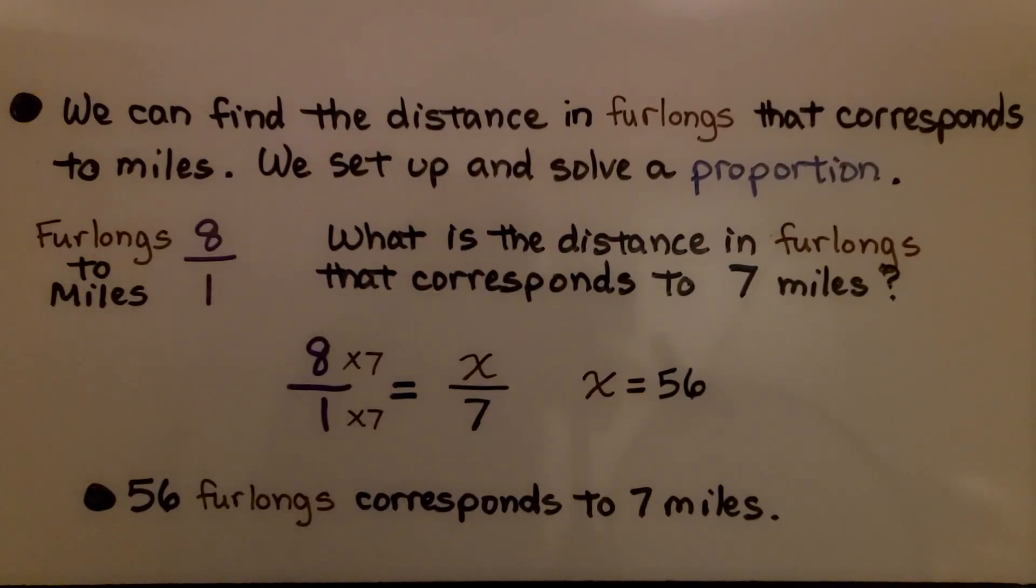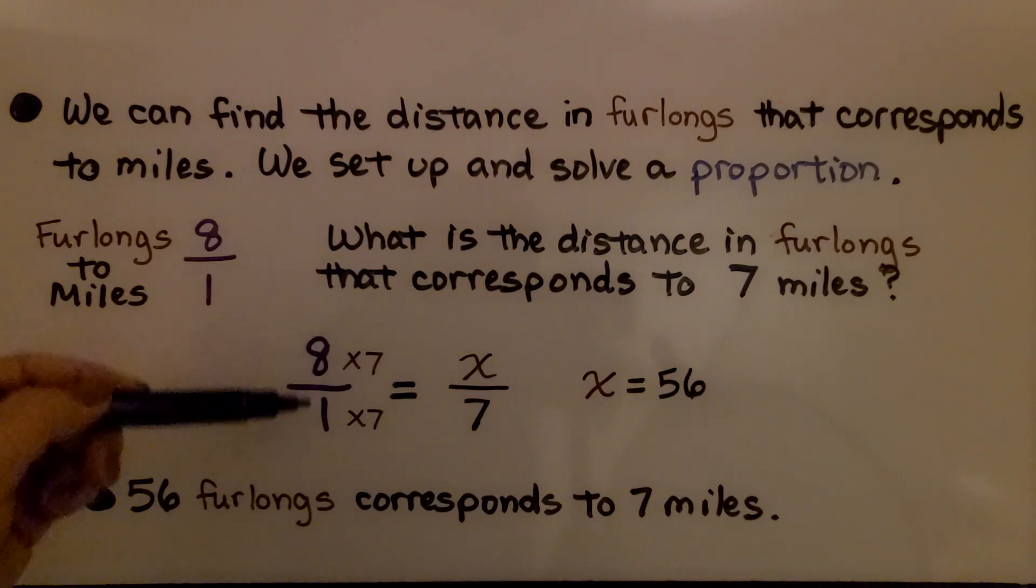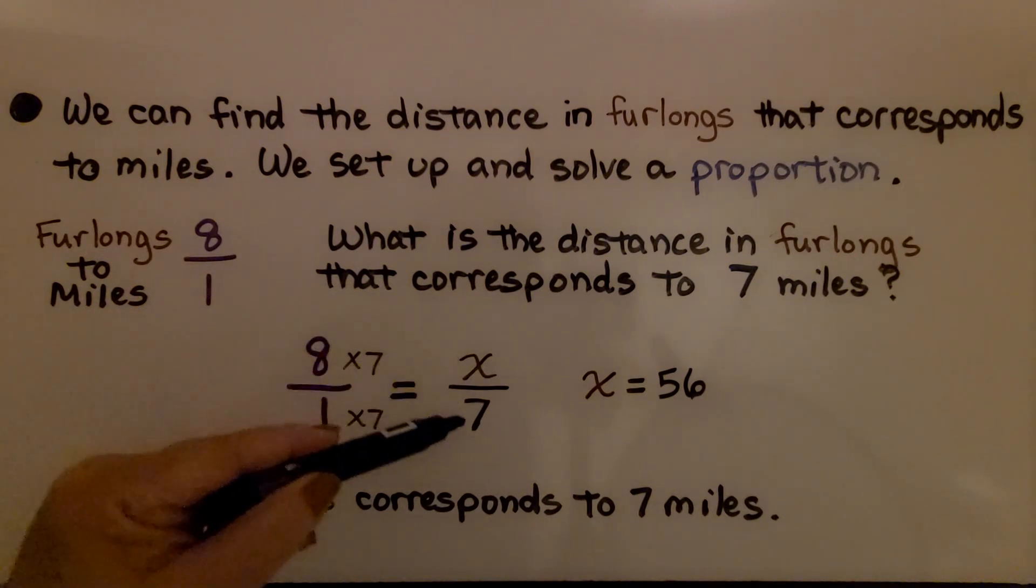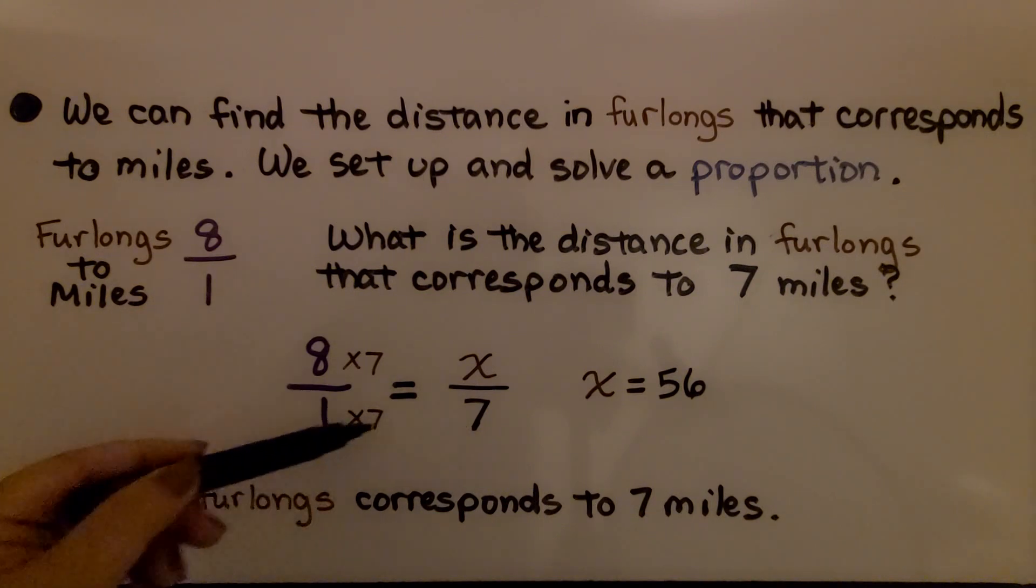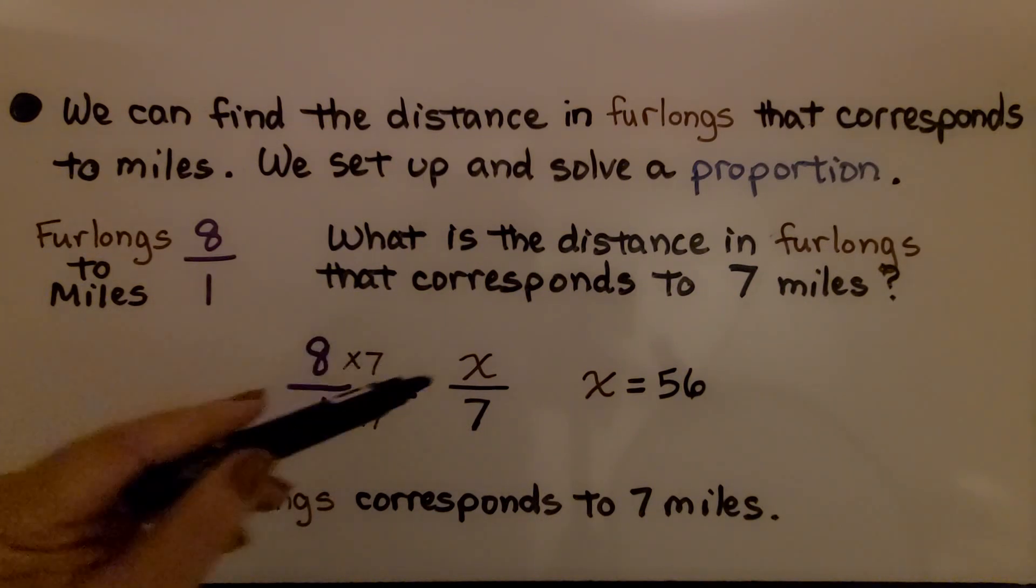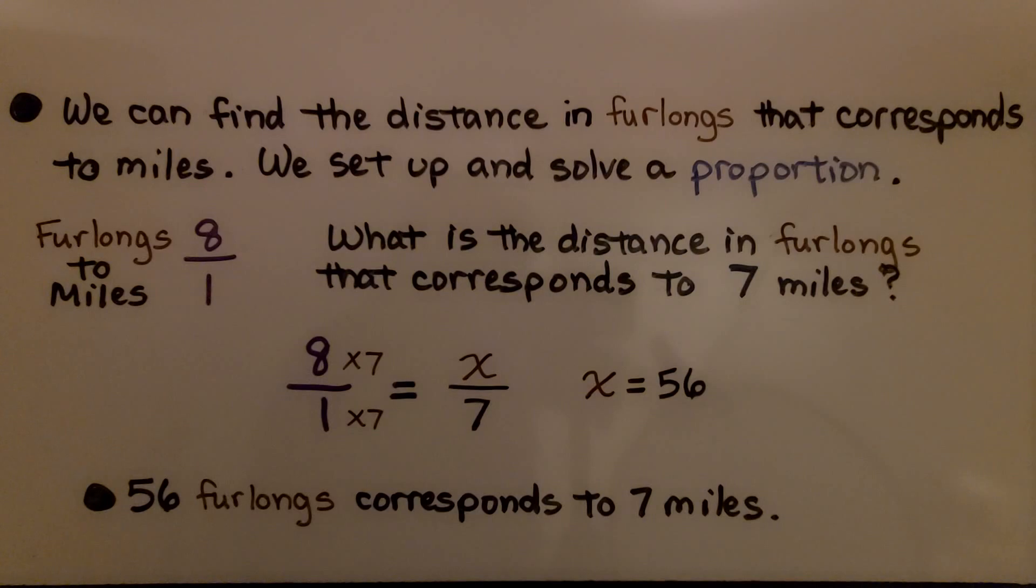We can find the distance in furlongs that corresponds to miles. We set up and solve a proportion. We have furlongs to miles, it's 8 to 1. So what is the distance in furlongs that corresponds to 7 miles? We do 8 to 1 and x over 7. We know 1 times 7 is 7, so we multiply the 8 by 7, we get x is equal to 56. 56 furlongs corresponds to 7 miles.